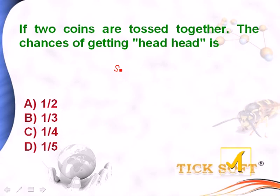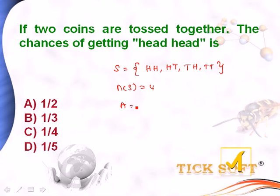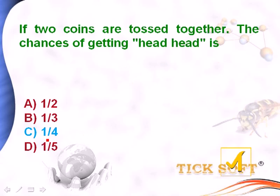If 2 coins are tossed, the possible outcomes are: head-head, head-tail, tail-head, and tail-tail. So n(S) is equal to 4. The chances of getting head-head is only 1, so n(A) is equal to 1. P(A) equals n(A) by n(S), that is 1 by 4. This is the probability of getting head-head. So option c, 1 by 4, is the right answer.